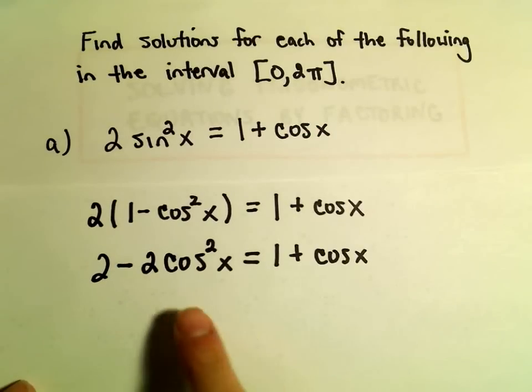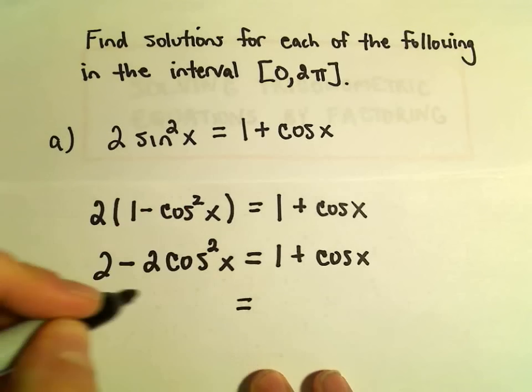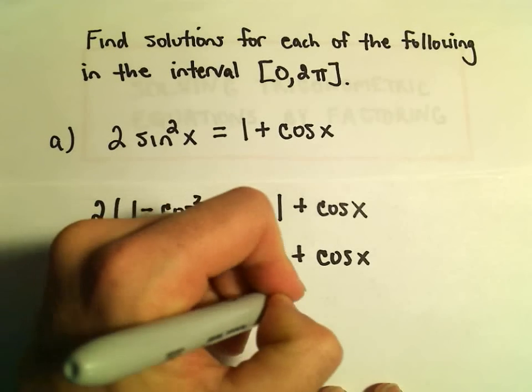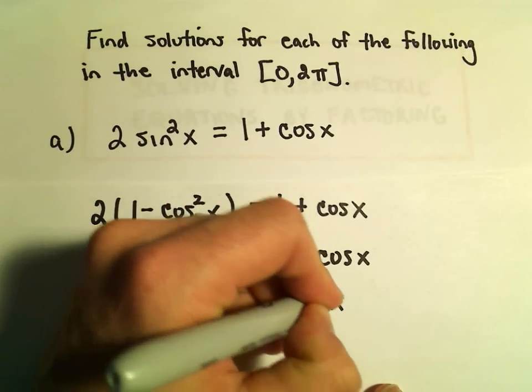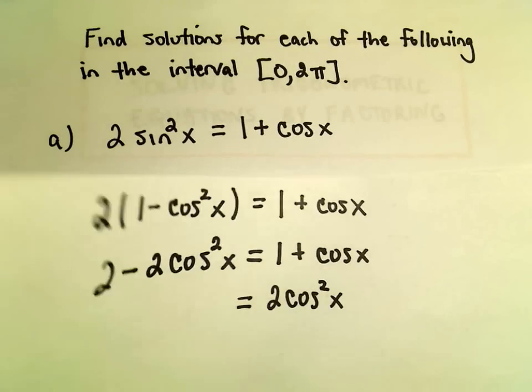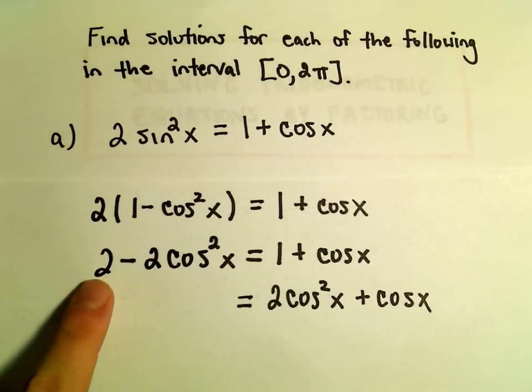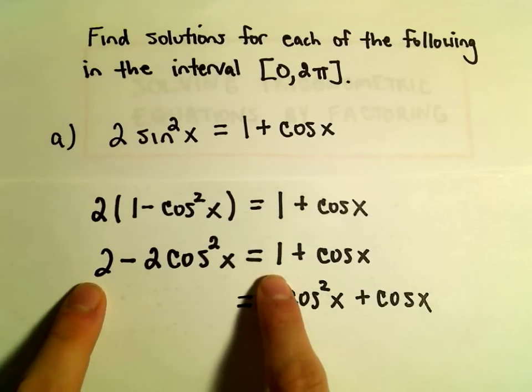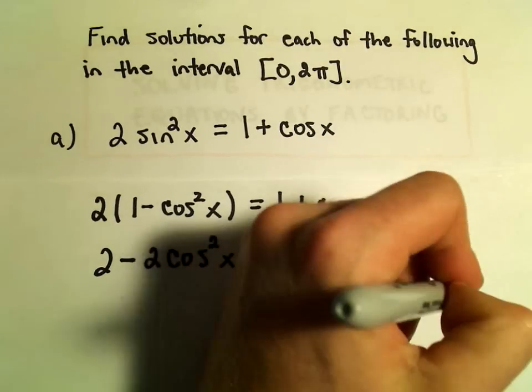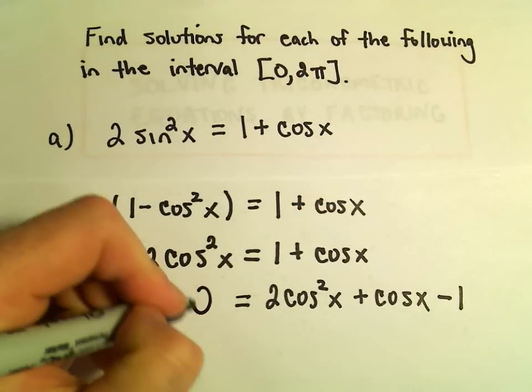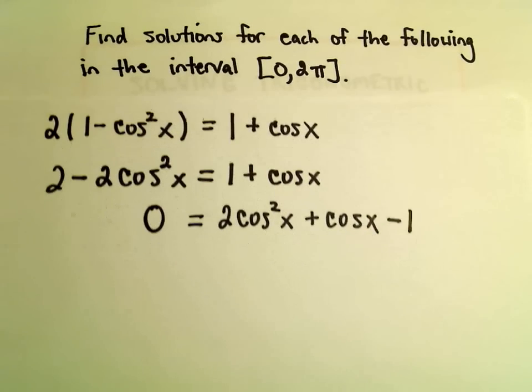And I think what I'm going to do is I'm going to add the 2cos²x to the right side. We've already got our positive cos x. I'm also going to subtract 2 from both sides, so 1 - 2 would simply give us -1, and then we'll be left with 0 on the left side.